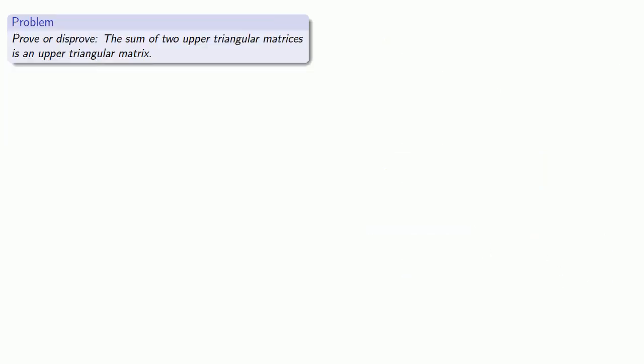So let's try some proofs. How about this one? The sum of two upper triangular matrices is also an upper triangular matrix. Well, maybe it's true. Maybe it isn't. Let's find out. Part of the reason that proof is valuable as a study tool for higher mathematics is that it forces us to review our definitions.